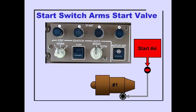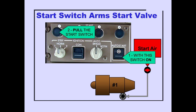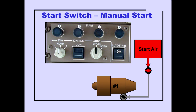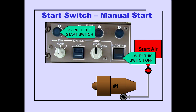With the auto start switch pushed on, pulling the start switch out arms the start valve for operation. With the auto start switch pushed off, pulling the start switch out opens the start valve. The start switch is held out by a solenoid. The light in the switch illuminates white when the start valve is open.